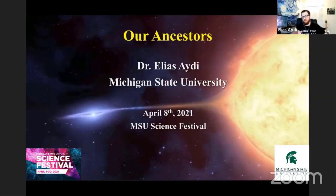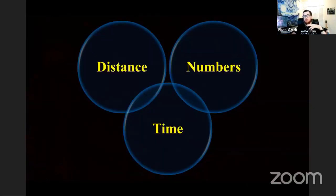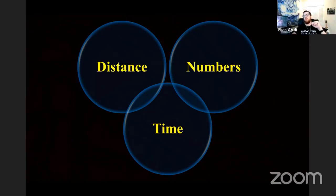Thank you very much, Catherine. Thank you again, and thank you everyone for joining us tonight. As you can see in the title of my talk today, tonight the talk will be about our ancestors. And no, it's not going to be a biology talk — it's going to be an astronomy talk. You'll understand why I chose 'our ancestors' as a title throughout the talk. Before starting any talk about astronomy, I usually like to introduce three scales or parameters — three cosmic scales that are a bit different in the universe than what we are used to in our daily life. These three scales are distance, numbers, and time.